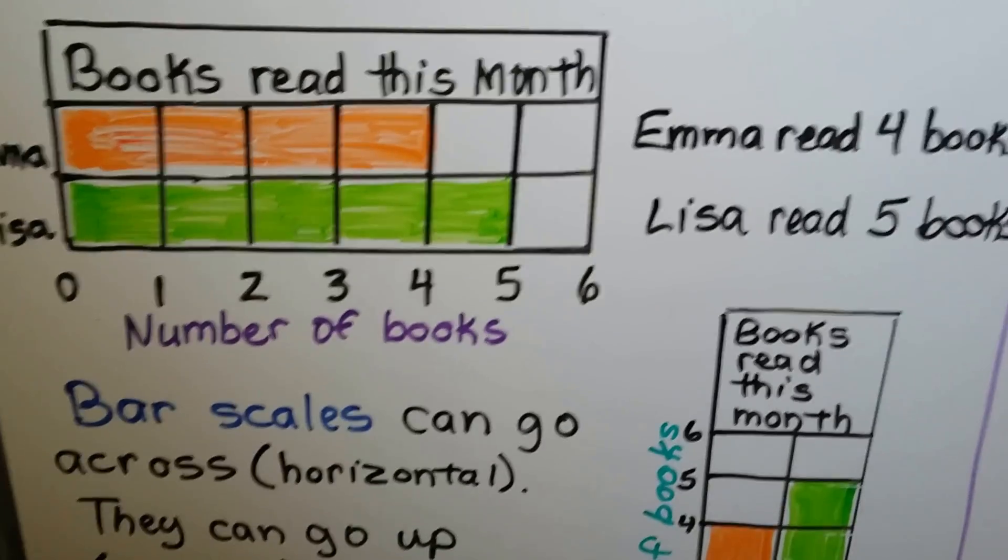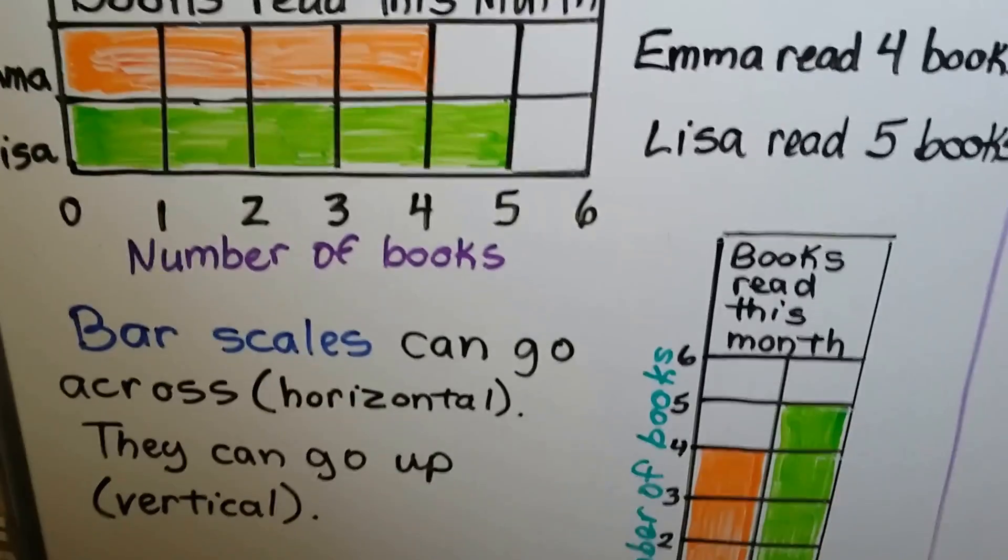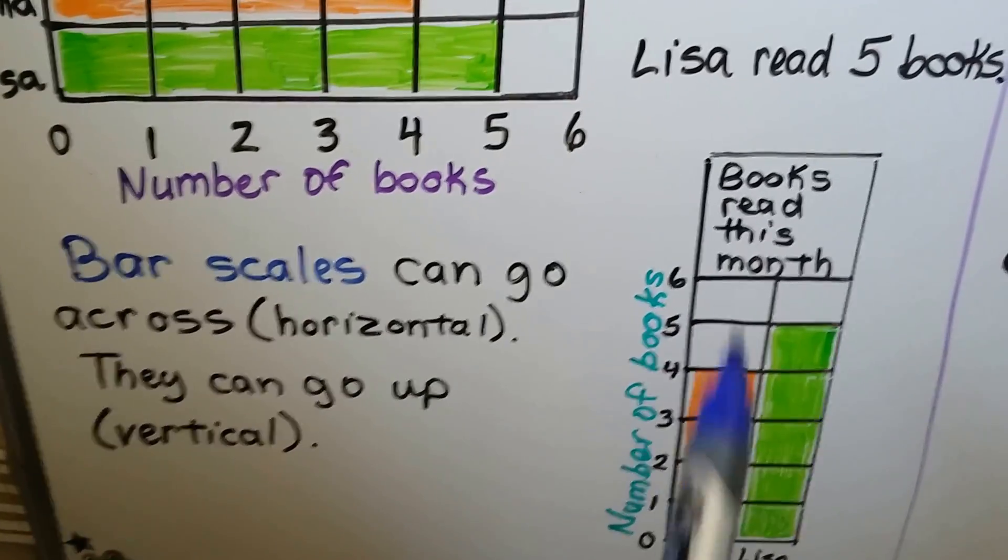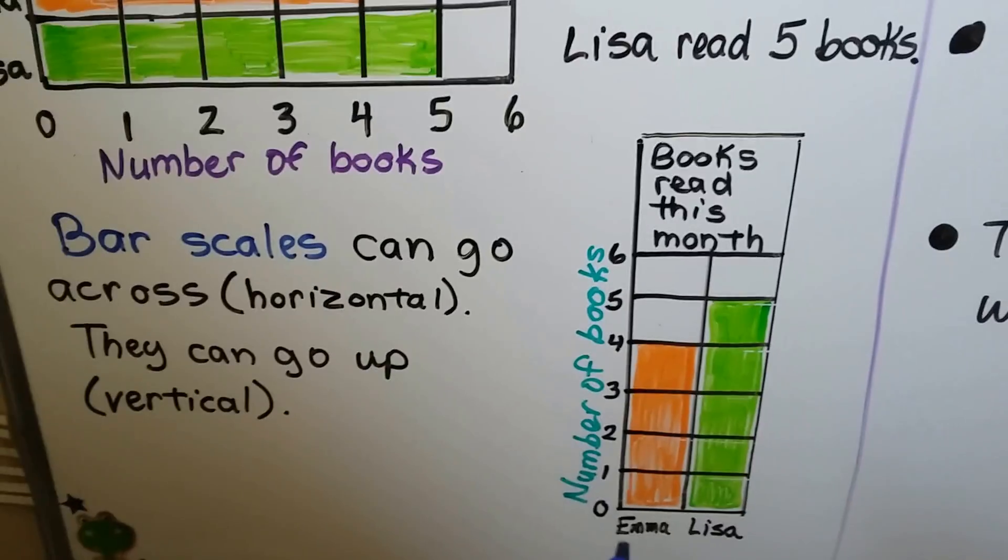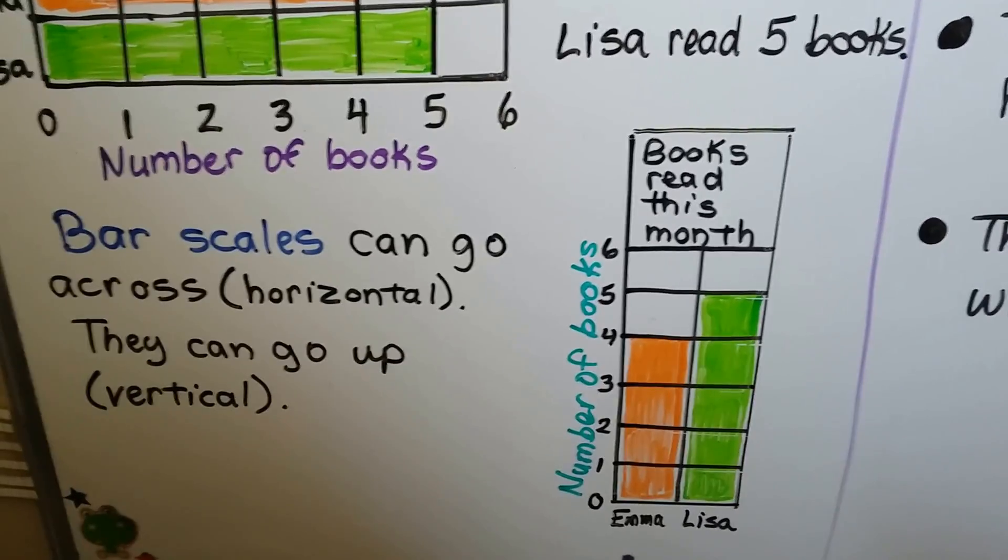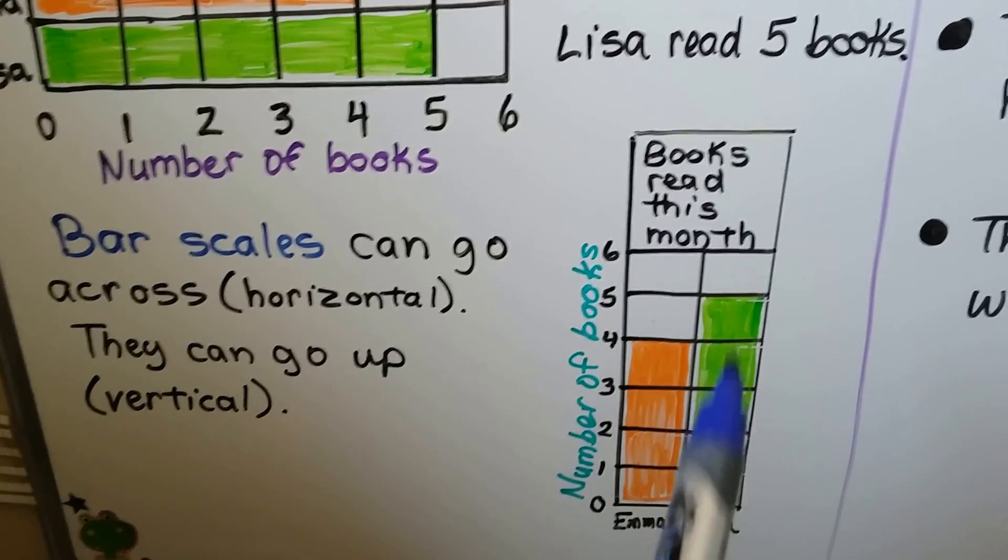Lisa read five books. Bar scales can go across, which is horizontal like this one, and they can go up. That's vertical like this one. So here's the same information but it's in a vertical bar graph. Emma read four books. Lisa read five books.